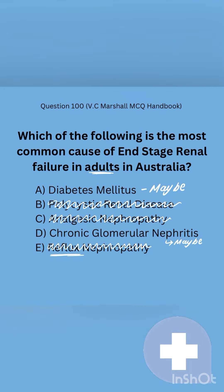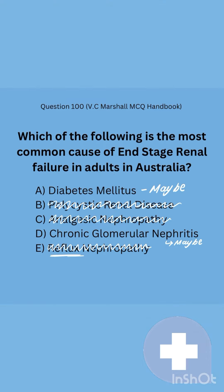We've narrowed it down to A and D, which is a tough call because both are technically correct. However, after considering all the options, I would pick D — chronic glomerular nephritis. This is because diabetes can technically cause chronic glomerular nephritis, and the question says 'diabetes mellitus' rather than 'diabetic nephropathy,' making D the safer choice. Thank you for watching, and head over to our YouTube for more useful tips.